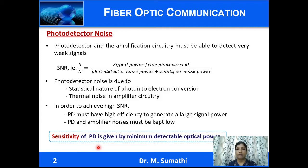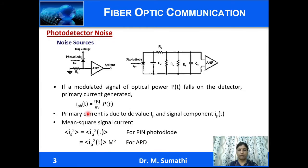Sensitivity of a photodiode is given by the minimum detectable optical power — that is, the optical power required to produce a photocurrent of the same magnitude as the RMS value of the noise current. Now let us look into the noise sources. This diagram shows a simple circuit of a photodiode and its associated equivalent circuit.